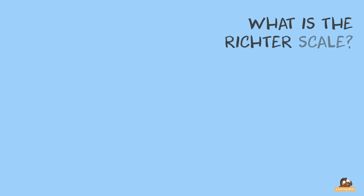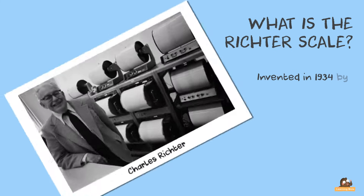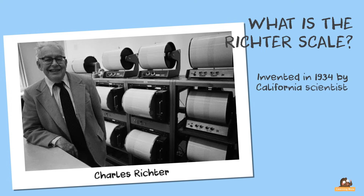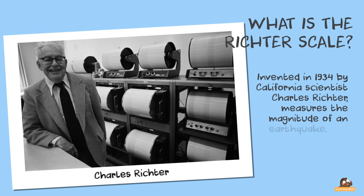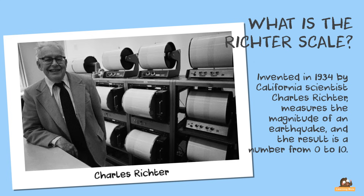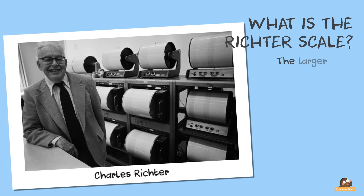What is the Richter scale? Scientists measure earthquakes using the Richter scale. This scale, invented in 1934 by California scientist Charles Richter, measures the magnitude of an earthquake, and a result is a number from 0 to 10. It's measured on a machine called a seismograph. The larger the number on the scale, the larger the earthquake.